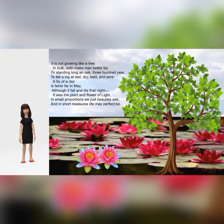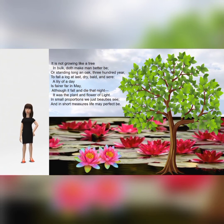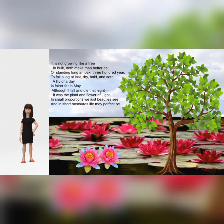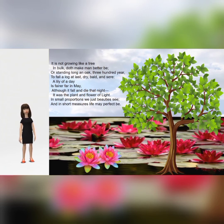In this poem, the poet Ben Johnson highlights the qualities that a man must possess to be considered noble. To explain this, he compares men to both an oak tree and a lily. The poet says that if a man is like an oak tree, he will no doubt live a long life and may also physically grow to be bulky. But just as the oak tree becomes a lifeless piece of log, a man blessed with great height, material assets, and long life will not remain long in the minds of people around him.